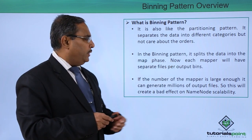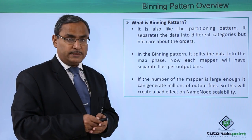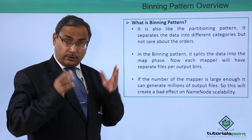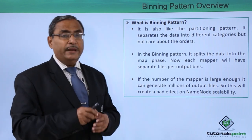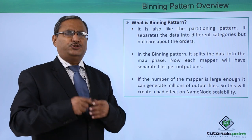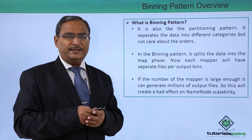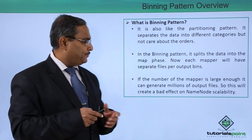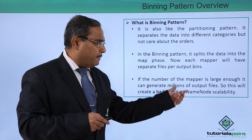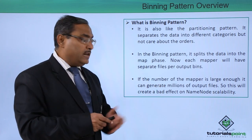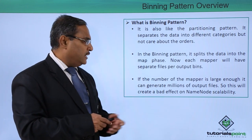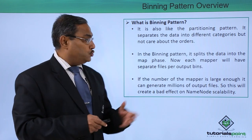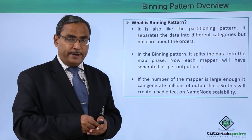Each mapper will have separate files per output bin, so a mapper will produce multiple output files. This is obviously a problem — if the system has millions of such mappers, so many output files will get generated, which will be a challenge for the namenode scalability. These are the problems with the binning pattern.